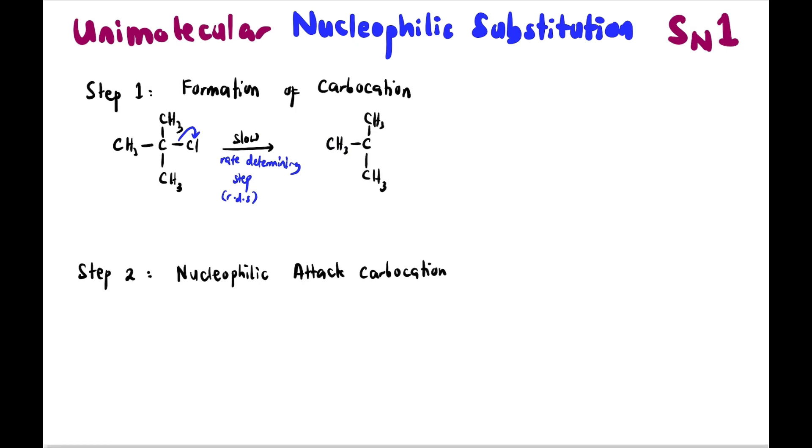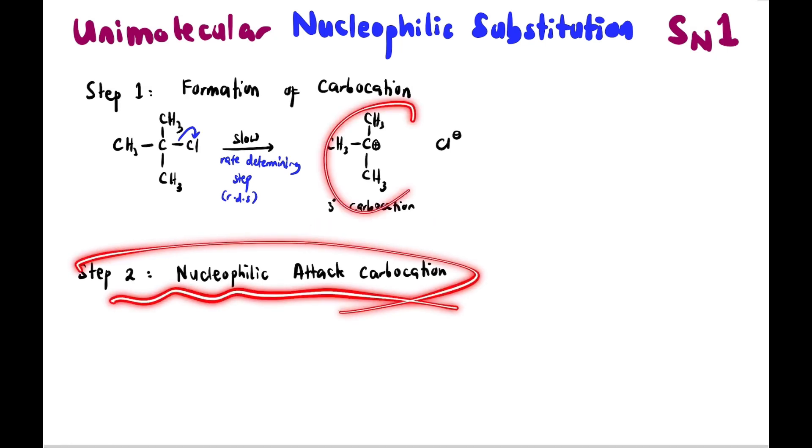By the way, Cl leaves because it's more electronegative than C. So when it leaves, it becomes Cl minus, leaving the carbon there to become a carbocation. And by the way, this is tertiary carbocation. It is very stable actually.